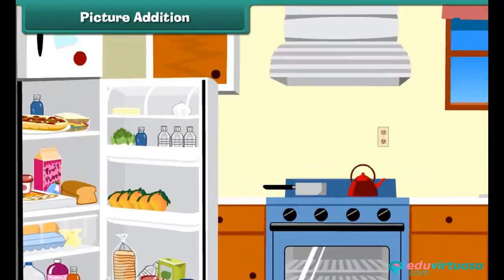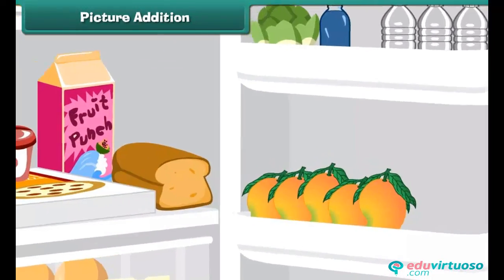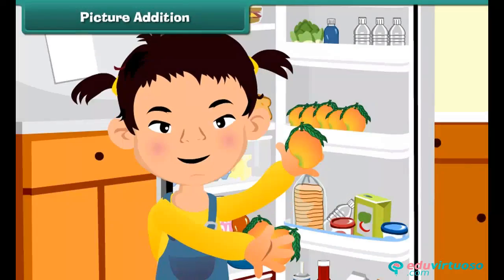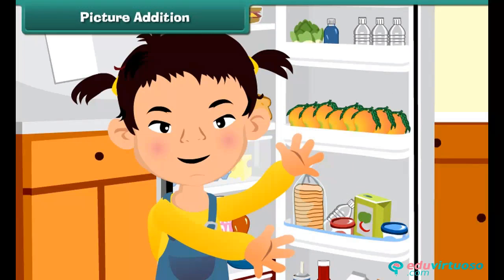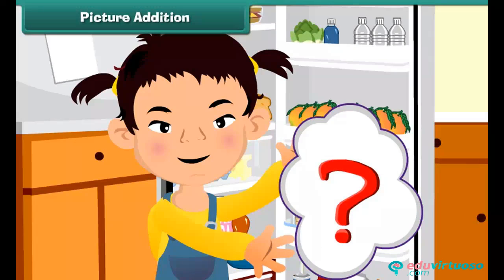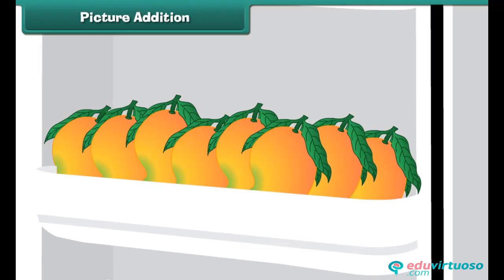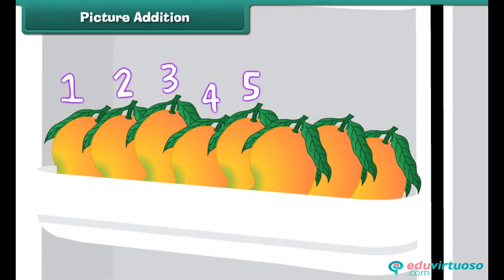There are five mangoes in the refrigerator. Shipra puts in three more. How many mangoes are there in the refrigerator? Count: 1, 2, 3, 4, 5, 6, 7, 8. There are eight mangoes in the refrigerator.